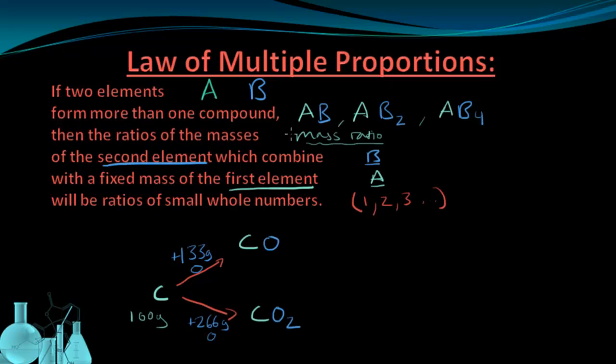Now we need to look at the mass ratio, this component here, the mass ratio that I talked about. We're looking at mass ratios of oxygen, because it says masses of the second element. So the mass ratio of oxygen that was used is 266 grams for the carbon dioxide over 133 grams of oxygen used in carbon monoxide.